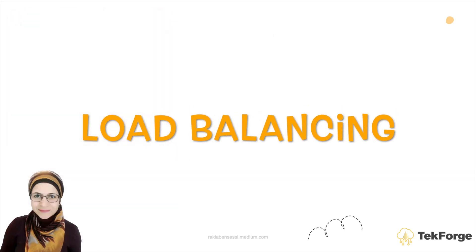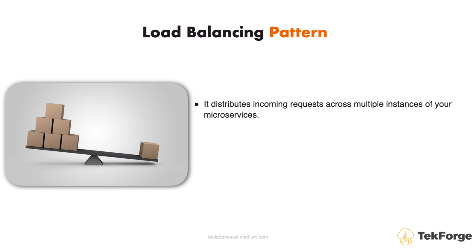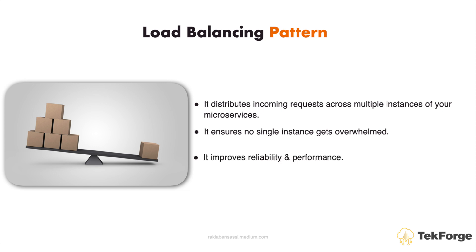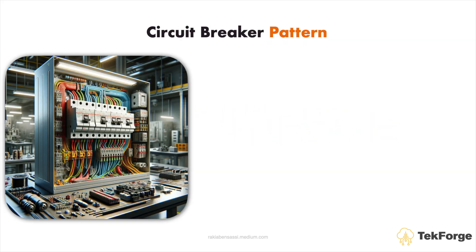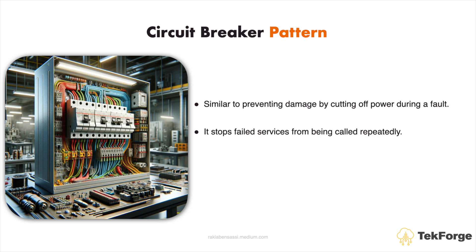Load Balancing distributes incoming requests across multiple instances of your microservice to ensure no single instance gets overwhelmed, improving reliability and performance. Circuit Breaker: just like an electrical circuit breaker prevents damage by cutting off power during a fault, this pattern stops failed services from being called repeatedly, helping maintain system stability and avoid cascading failures.